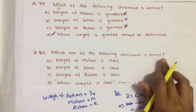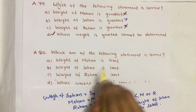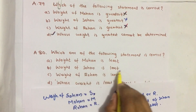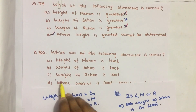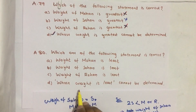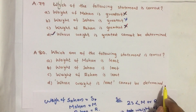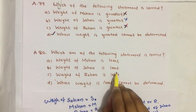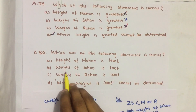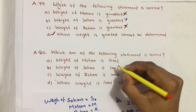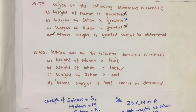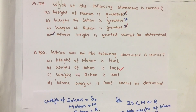Now question number 80: which of the following statements is correct — weight of Mohan is least, weight of Sohan is least, weight of Rohan is least, or cannot be determined? From the first statement itself we know the weight of Sohan is the least, so our answer is option B. If you have any suggestions please comment, don't forget to like, share and subscribe our channel. Keep supporting and loving us. Jai Hind.